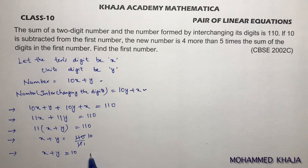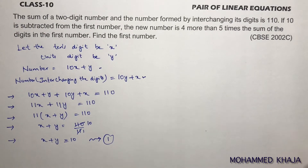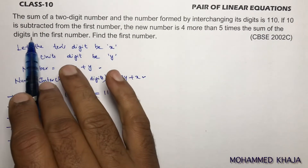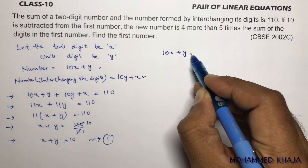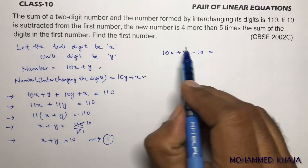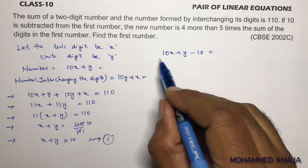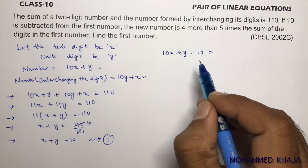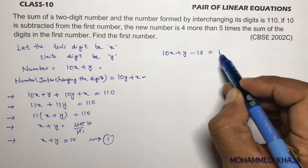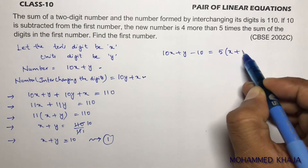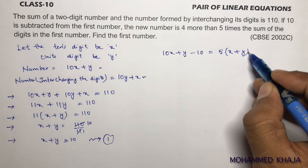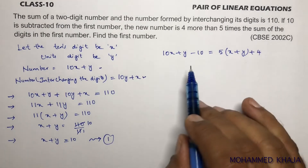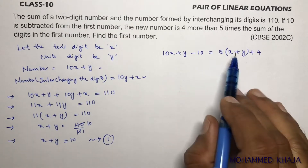For the second equation: if 10 is subtracted from the number 10x + y, the new number is 4 more than 5 times the sum of the digits. The sum of the digits means x + y, not 10x + y. So the equation is: 10x + y − 10 = 5(x + y) + 4.